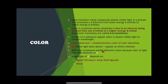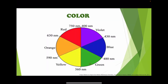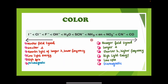Different complexes exhibit different colors because the color of light absorbed depends on delta. The magnitude of delta depends on the ligand — strong field ligands have a large delta, and weak field ligands have a small delta. The magnitude of delta also depends on the metal. Here is the color wheel: shorter wavelength on one end, longer wavelength on the other. When the absorbed color is violet, the observed color is yellow — the complementary color.